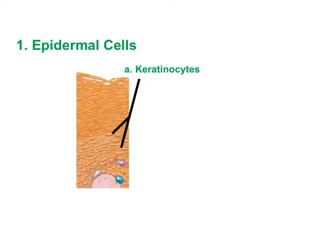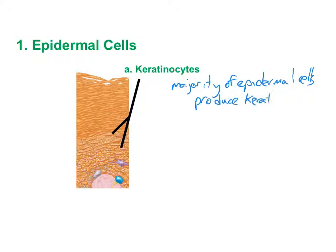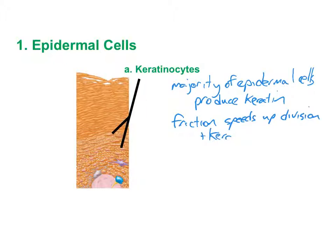Starting with keratinocytes — these are the majority of epidermal cells and get their name because they produce keratin, a fibrous protein. One interesting thing about keratinocytes is that adding friction to the outside of the epidermis accelerates the rate of cell division and keratinization. If you expose an area of skin to friction long-term, this leads to calluses.